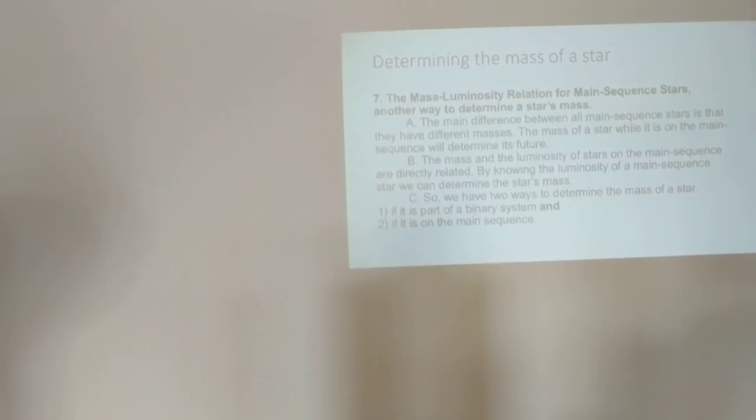So we have two ways to determine the mass of a star: if it's part of a binary system and if it's on the main sequence. Either way allows us to determine the mass. A star that is not on the main sequence and is not part of a binary system, we will not be able to do that.